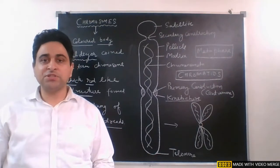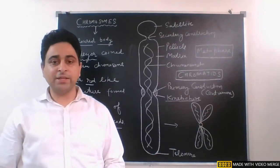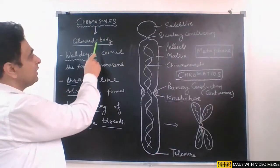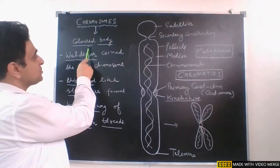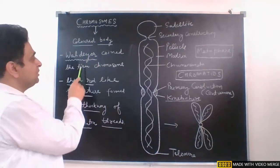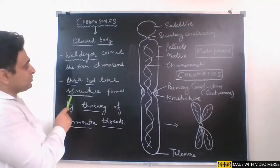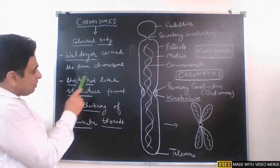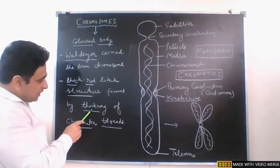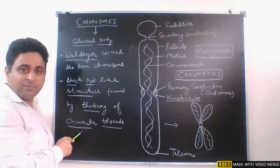Welcome students, myself Ashwini Sharma. Let us start today's topic, that is Chromosomes. Chromosomes literally means 'colored body'; this term is coined by Waldir. They are thick rod-like structures which are formed by thickening or condensation of chromatin threads.